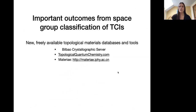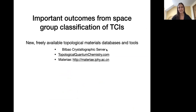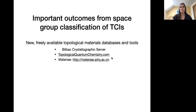There have been a few important outcomes from this classification. The first is that there are now freely available topological materials databases online. The Bilbao Crystallographic Server has been around for a while, and I've been part of a team that added data enumerating all atomic limit phases. If you look in a particular space group, you can see the basis set of atomic limit phases and their symmetry eigenvalues. Two additional materials websites use ab initio calculations for tens of thousands of materials where symmetry indices have been computed.